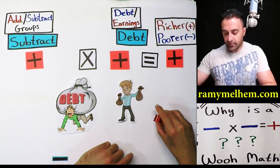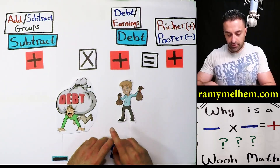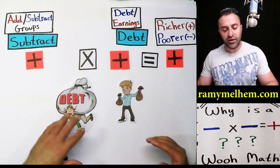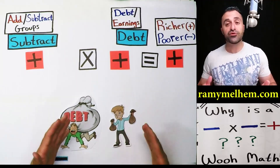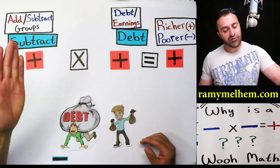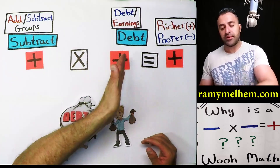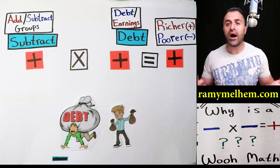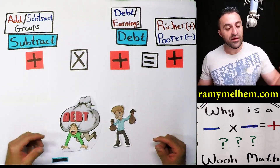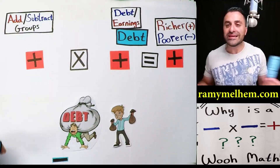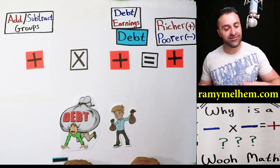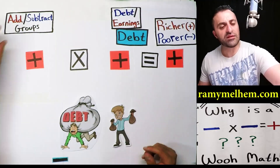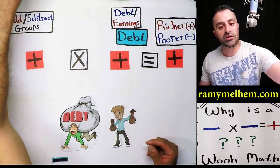I want to focus on this first example: a positive multiplied by a positive equals a positive. Why? Because this positive here — what does it indicate? Well, it's either adding or subtracting groups. In fact, let's make it more clear — let's break this up into groups.